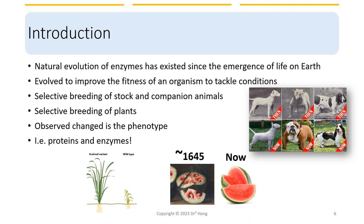Most importantly, the result of directed evolution is what the population desires. We see the appearance of an organism changed as the result of directed evolution, or we call it changes in phenotype. But what really has changed at the cellular level? It is all about proteins and enzymes that are expressed within each cell.